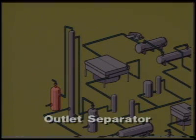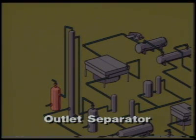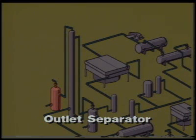Some sweetening units also use an outlet separator to remove entrained liquids before the gas goes on to further processing, such as glycol dehydration, or before the gas is sold.